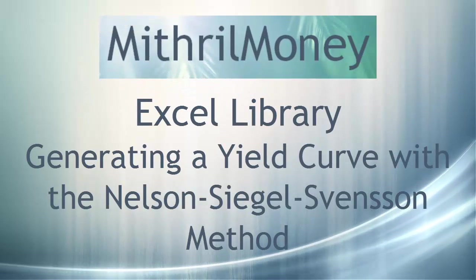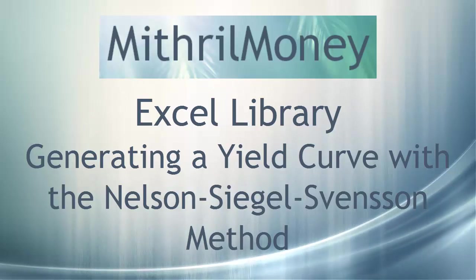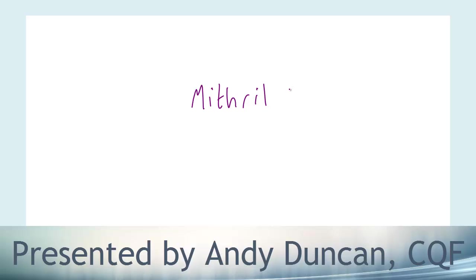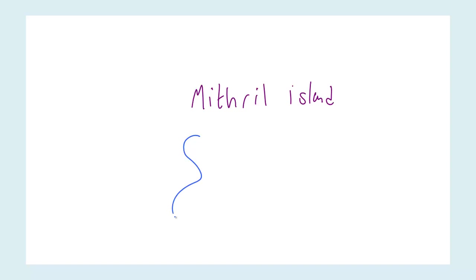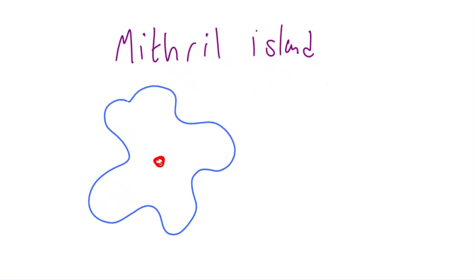Hello and welcome to this special Mithril Money Excel Library video on generating a yield curve with the Nelson-Siegel-Svensson method. We live in a country called Mithril Island, somewhere in the Pacific. In the capital city, Ring Central, we have a special bank called the Mithril Money Bank, and we use them to provide the standard riskless yield curve.